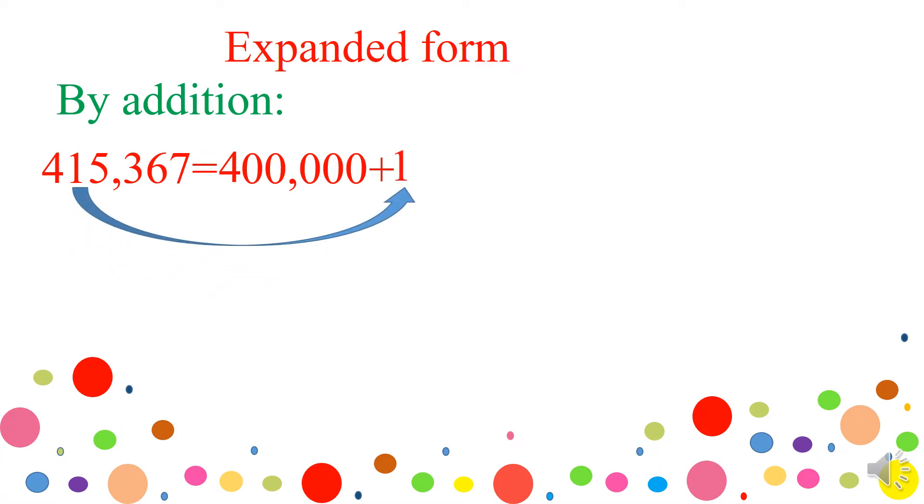Then, we have to write the one. And I will count how many digits after the one do you have? Four digits. I replace them by four zeros. Plus, we have to take now the five. And I will count how many digits after it do you have? Three digits. Then, we have to put the three zeros.